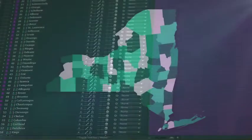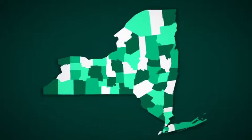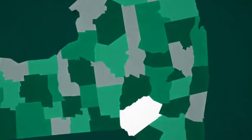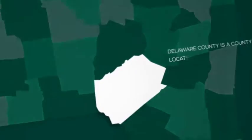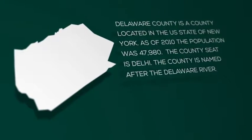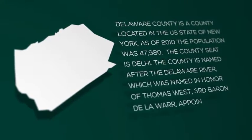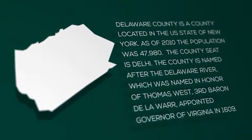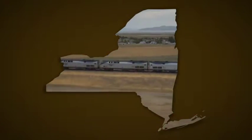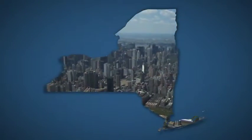Zoom in to areas of interest and hide the layers you don't need to focus on certain regions. Animate individual counties and add your own text and camera moves as required. Use your own content as a texture for the state map.